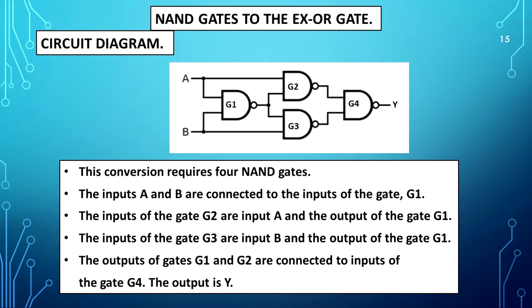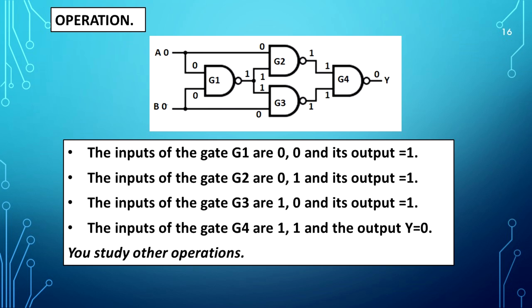NAND gate to XOR gate circuit diagram is shown. This conversion requires four NAND gates. Inputs A and B are connected to the inputs of G1. The inputs of G2 are input A and the output of G1. The inputs of G3 are input B and the output of G1. The outputs of G2 and G3 are connected to the inputs of G4. The output is Y. Operation: G1 inputs 0,0 output 1; G2 inputs 0,1 output 1; G3 inputs 1,0 output 1; G4 inputs 1,1 and output Y equals 0.